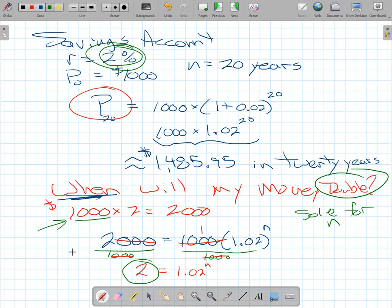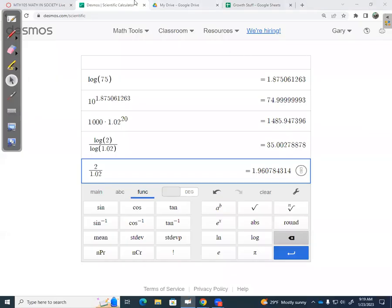In this case, no matter how much money you start with, if your savings account increases by 2% per year, 35 years later will always be the doubling point. So if that's true, the next time my money will double would be another 35 years or about 70 years in the future. And I'm pretty sure I had that in my table.